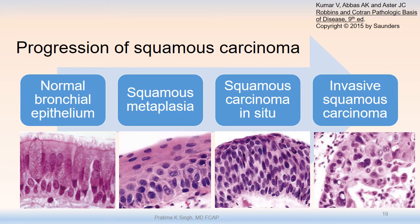This is a full timeline of what occurs in the genesis of squamous carcinoma. From normal bronchial epithelium, after repeat injury and insults, squamous metaplasia sets in. This predisposes to dysplastic conditions, which then evolve into full-on squamous carcinoma in situ. Once that particular neoplasm becomes invasive, it becomes invasive squamous carcinoma.